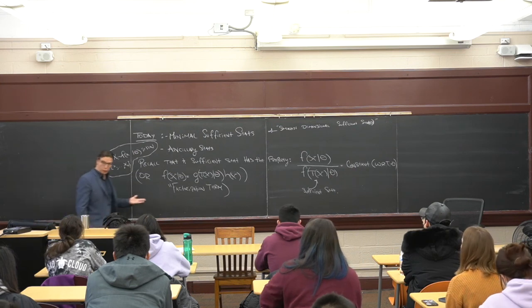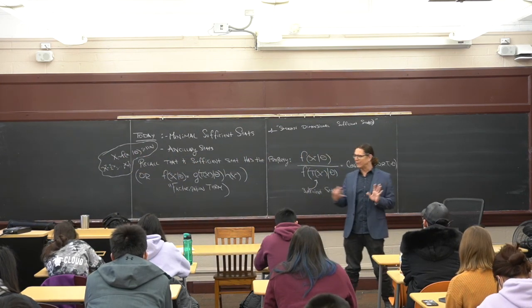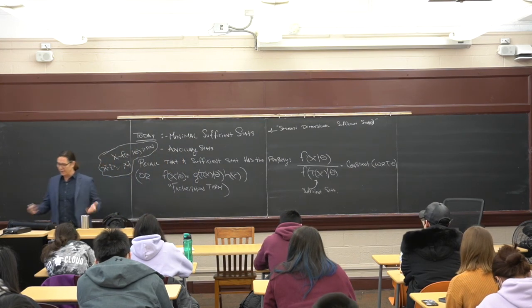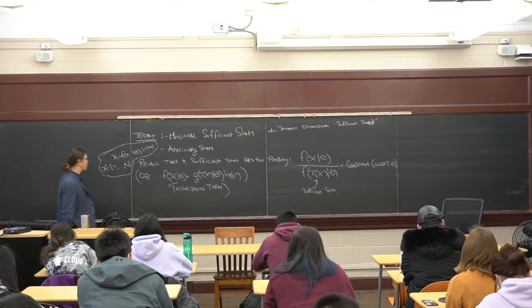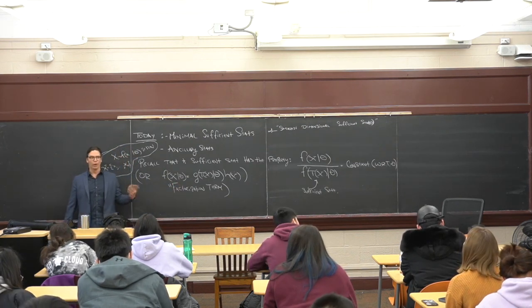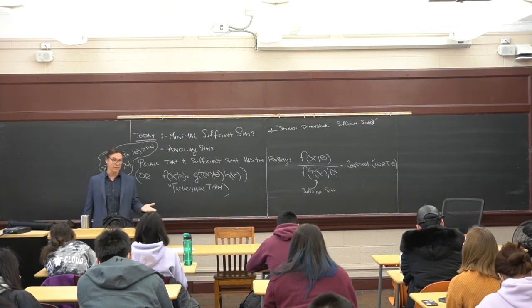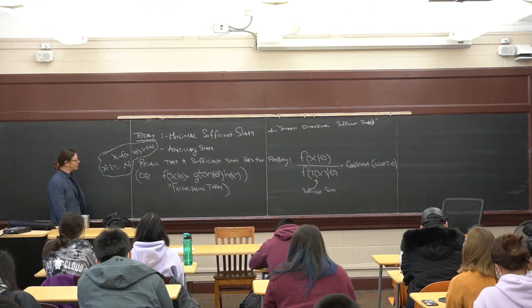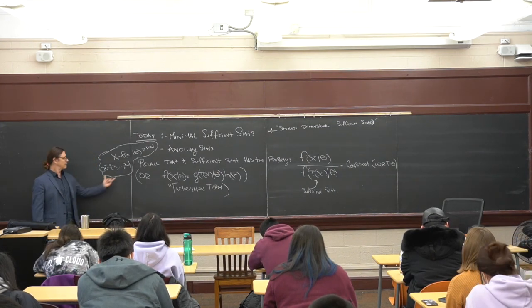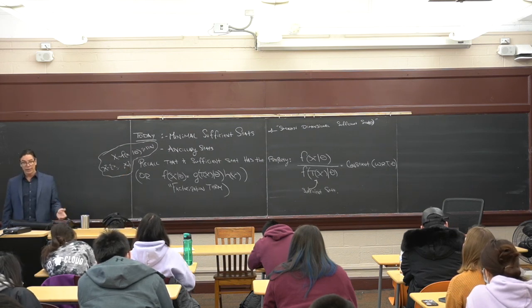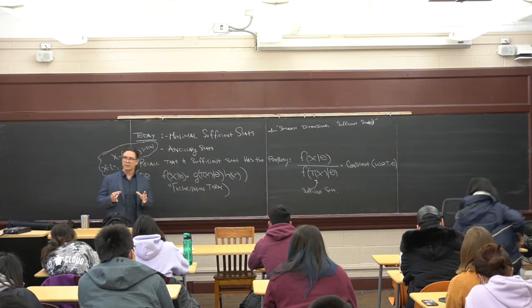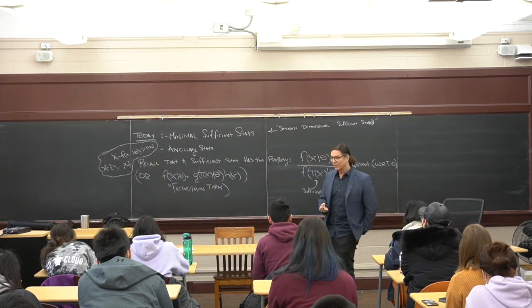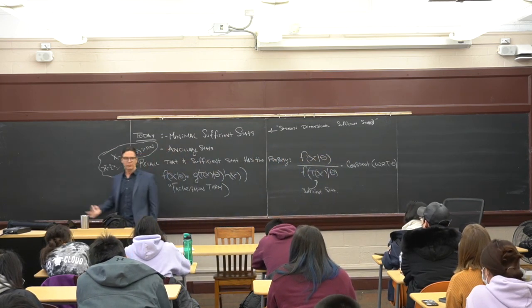We're going to be talking about minimal sufficient statistics. We've alluded to them over and over — they are the smallest dimensional sufficient statistic. The data itself is always sufficient on its own; the data you get out of the model is going to be sufficient for inferring the model parameters theta. If you're thinking about a normal distribution, theta might be mu, the mean, or sigma, depending on what you know. The data is sufficient, but it's n-dimensional — a big vector — so the question is can we work with something smaller in dimension and still retain all the information about the parameter space?